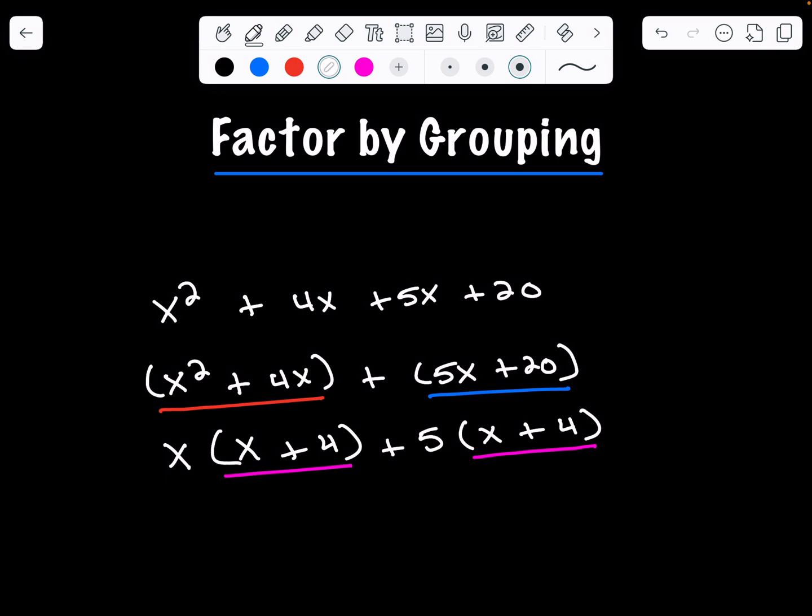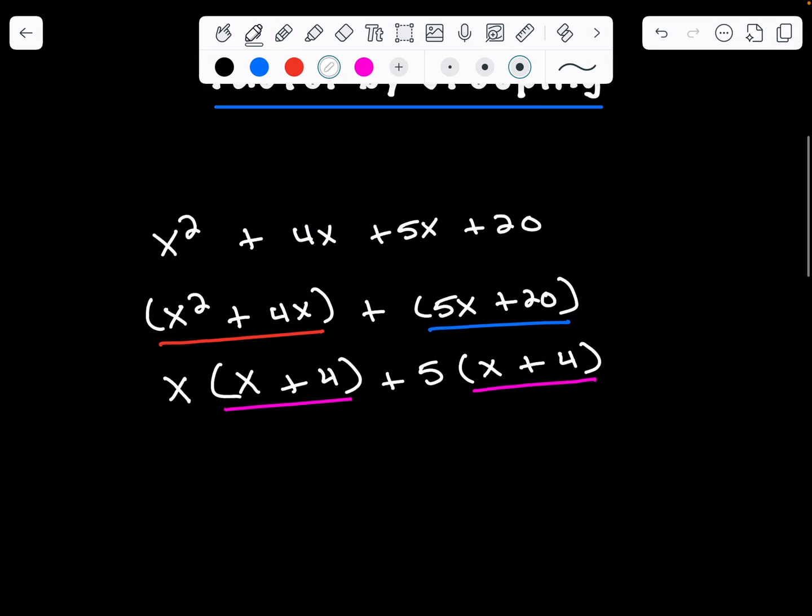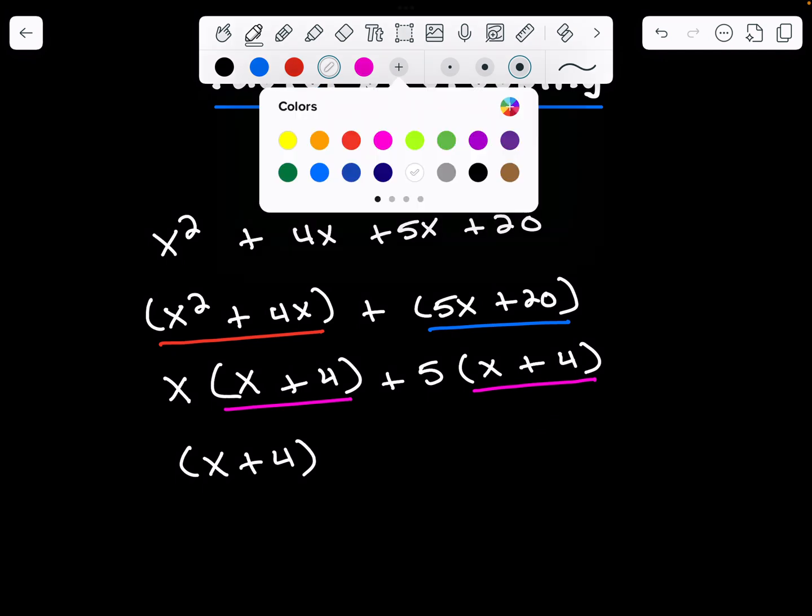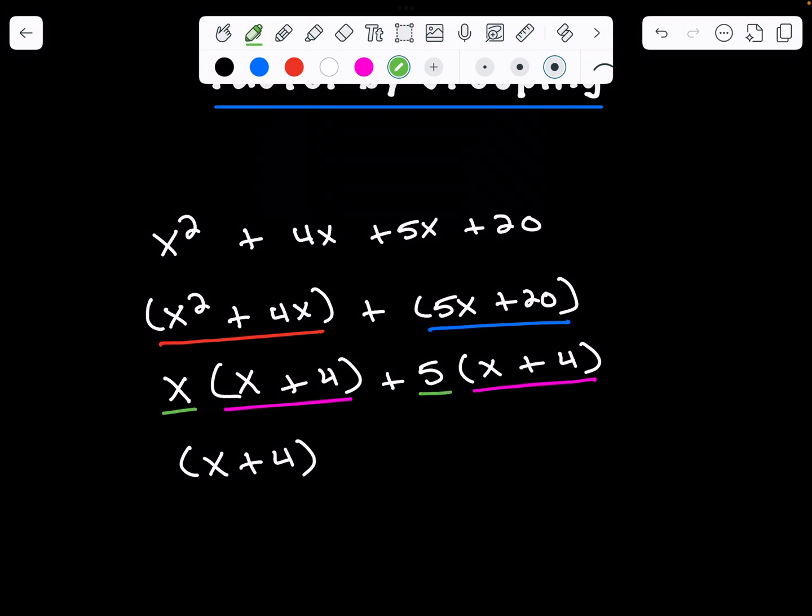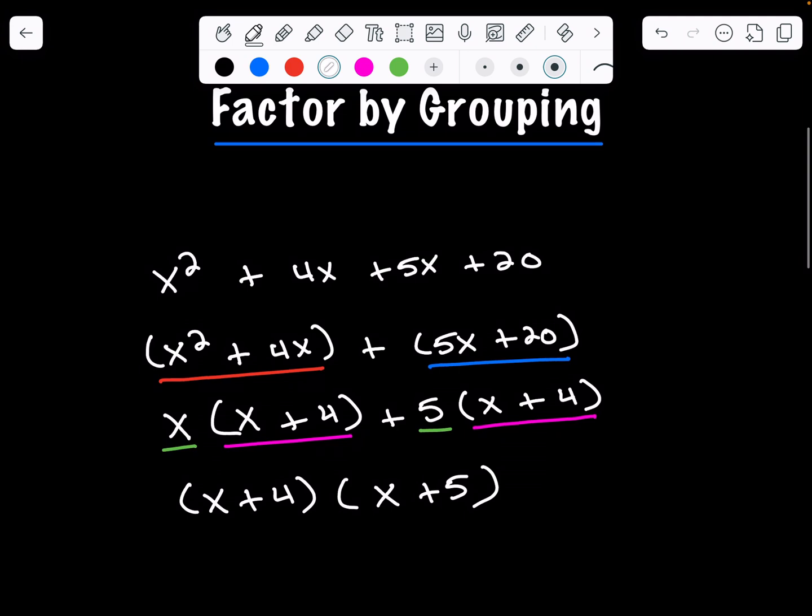The third step is to look for a common binomial factor. That's what we just found, (x + 4) and (x + 4). We know that (x + 4) is going to be a part of our answer. The last two things that we're left with is x and 5. So let's put that together as (x + 5). So the polynomial x² + 4x + 5x + 20 can be factored into (x + 4)(x + 5).